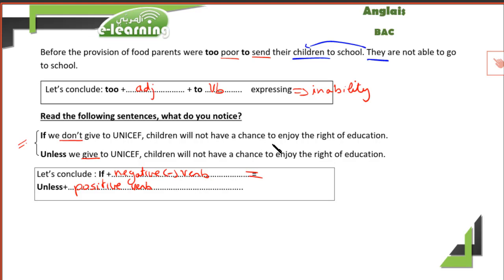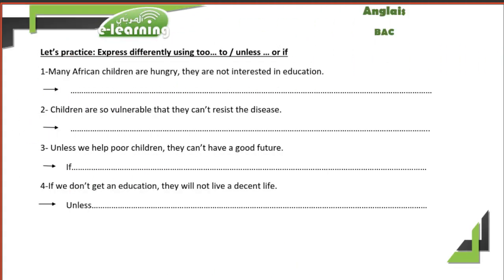For example: 'If we don't give to UNICEF, children will not have a chance to enjoy the right of education.' If we replace 'if' by 'unless,' don't change the second clause — we change only the verb: with 'if' use a negative verb, with 'unless' use a positive verb. I hope you understand this point of grammar; we will practice it later.